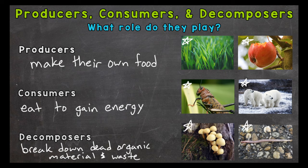Producers, consumers, and decomposers all play huge roles within an ecosystem and the circle of life, so to speak. You can think of it as a cycle: we start with the producers, go to the consumers, and the decomposers recycle the nutrients of the dead organic matter and waste from both consumers and producers. Those nutrients are then used by producers along with the energy from the Sun to start the cycle all over again.